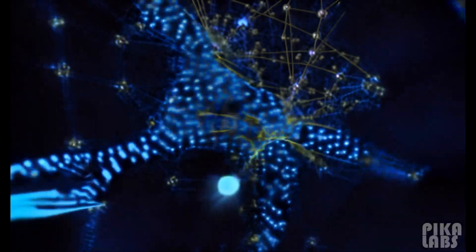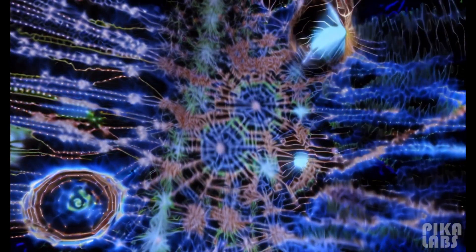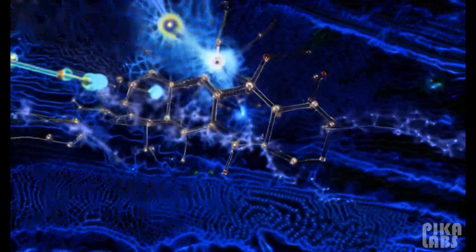Ethereum is built on a decentralized network of nodes that collectively maintain the blockchain. Each node runs the Ethereum software and stores a copy of the entire blockchain. Transactions are broadcast to the network and verified by the nodes. Once verified, transactions are added to a block and appended to the blockchain.